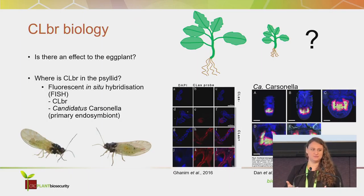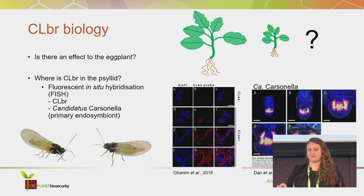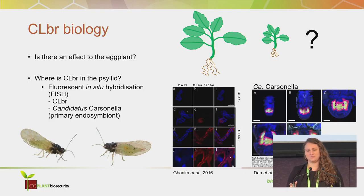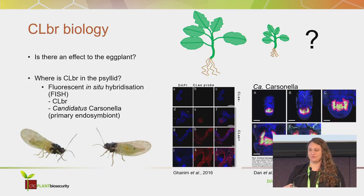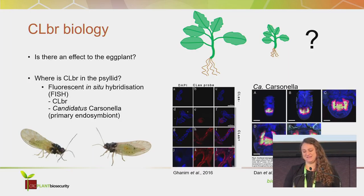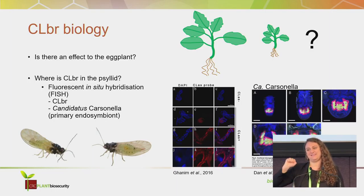I still have questions about the biology of brunswickensis. We want to know whether there is an effect on the eggplant, so more experiments are underway measuring psyllid feeding with and without the bacteria on plants, checking dry weights, height, and root length. I also want to see where the Liberibacter is within the psyllid using fluorescent in situ hybridisation — where a probe binds to the bacterial DNA and is visualised under a microscope. Because my Liberibacter has a similar sequence to Asiaticus, I may be able to use an already-designed probe, and I would also like to show where one of the primary endosymbionts is.